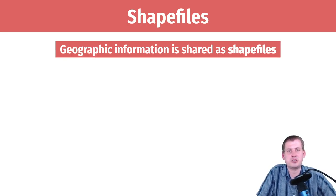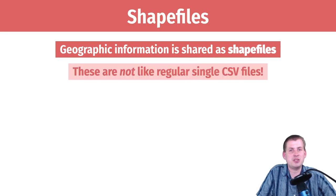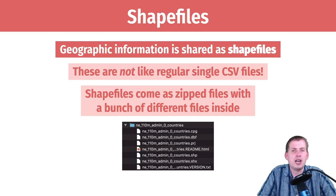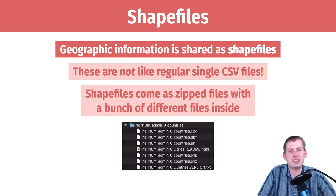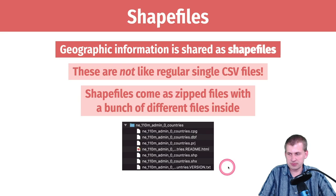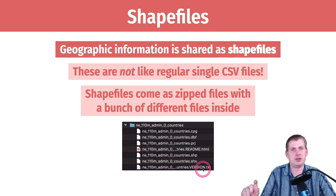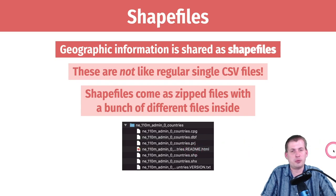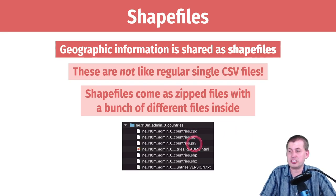Shape files are how we read geographic data and they are different from CSV files or spreadsheets or anything you've ever worked with. They do not look like regular CSV files — in fact they're not even a single file. When you download a shape file from the internet it will generally come as a zipped file that you then unzip, and inside it'll have a whole bunch of different other files. Some of these aren't super important — like a text file that says the version of the map, or a readme file with instructions and caveats.